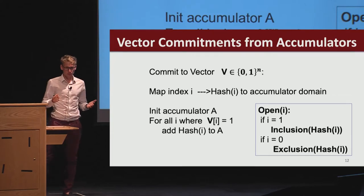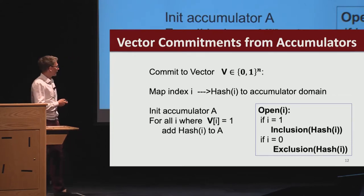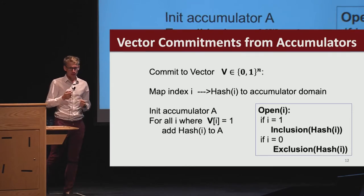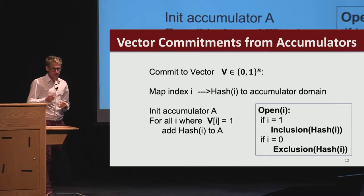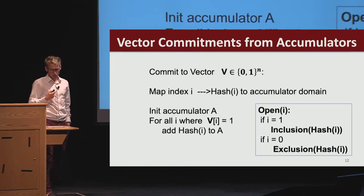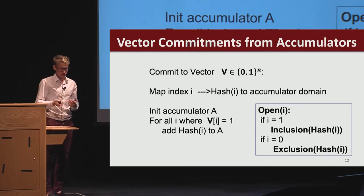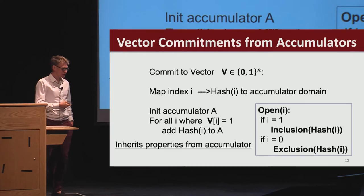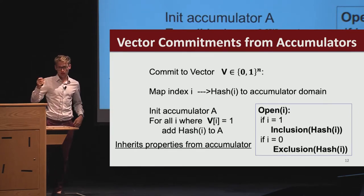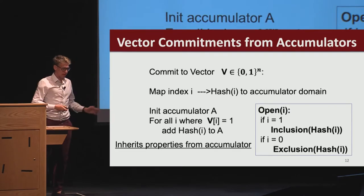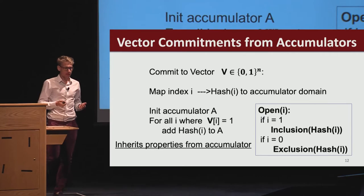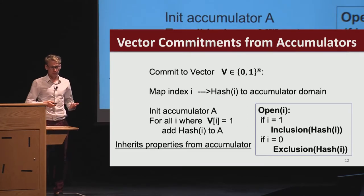What does a vector commitment built from an accumulator look like? It turns out to be a fairly simple construction. The idea is that we commit to a bit vector: at every index, the vector is either zero or one. We simply hash each index into the accumulator domain. If the bit of the vector is set to one, we add the hash of the index to the accumulator. To open, I can give an inclusion proof if the bit is set, or an exclusion proof if the bit is zero. This construction already has nice properties because it inherits them from the accumulator. However, a downside is that if I want to open to a large set of elements, I need to give many inclusion and many exclusion proofs—it's not a sub-vector commitment yet.